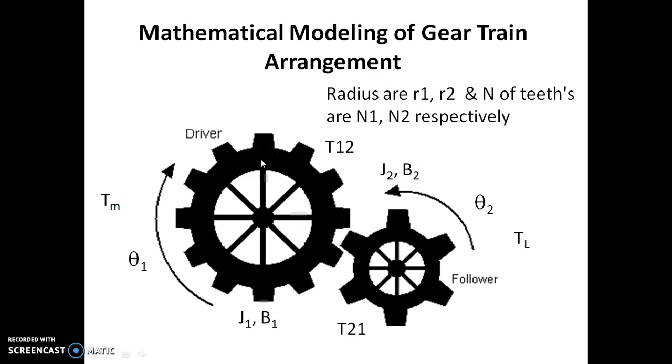In our diagram we have two gears: the bigger gear with radius r1 and teeth N1, and a smaller one with radius r2 and teeth N2. We will call the bigger one the driver wheel and the smaller one the follower wheel. Now we are applying Tm amount of torque on the driver wheel and the wheel moves theta1 angle.